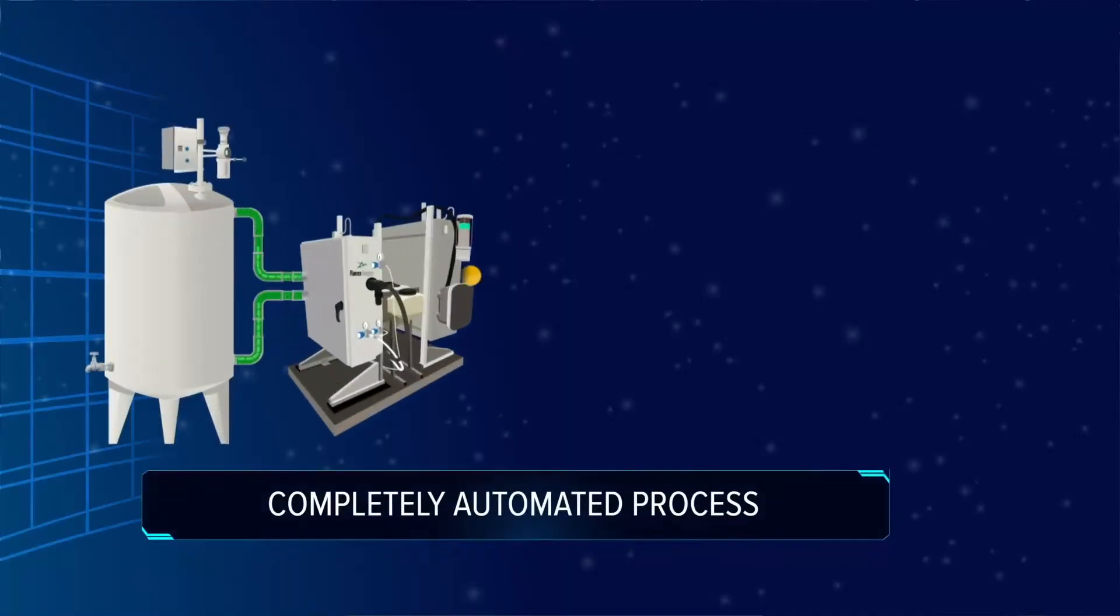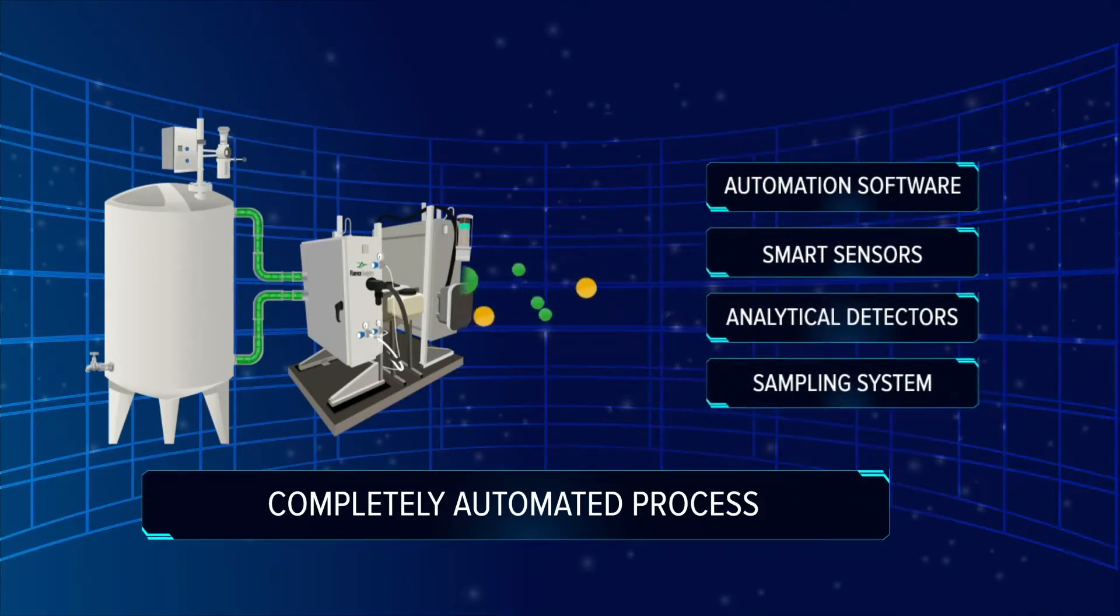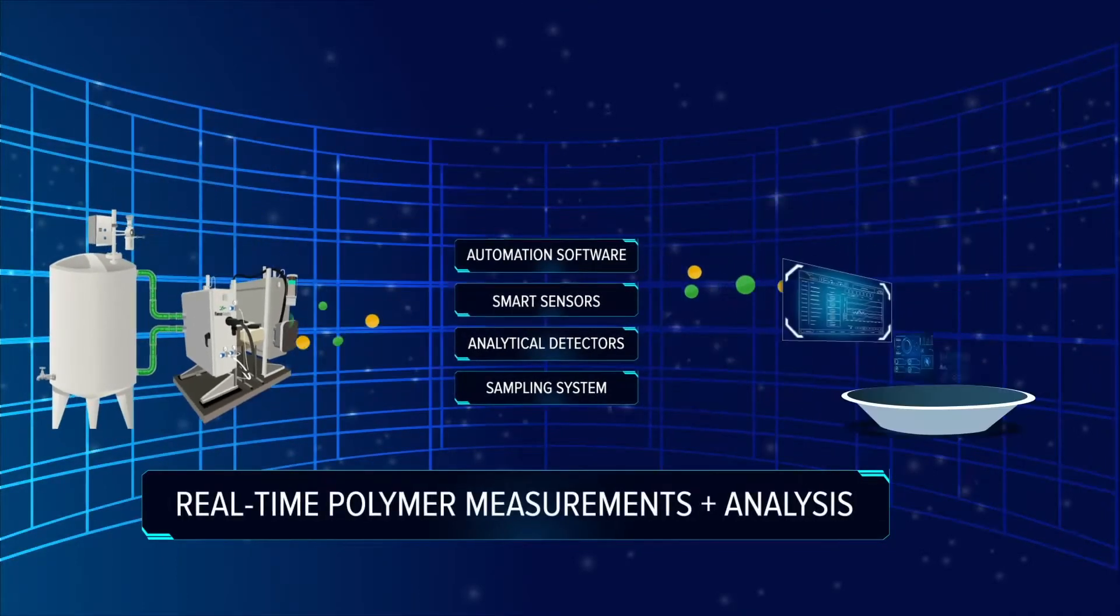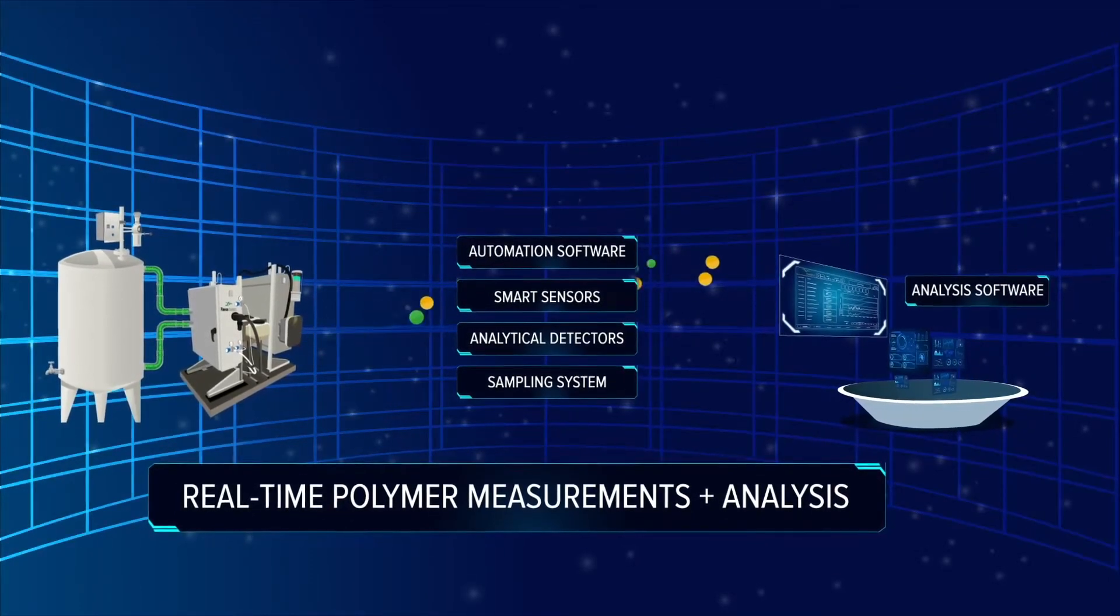ACOMP is an automated system that continuously extracts, dilutes, and measures properties of the reactor contents. The real-time measurements generated by ACOMP improve advanced process control and optimization strategies.